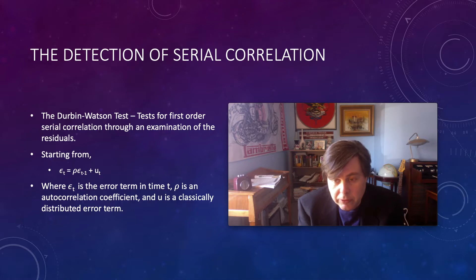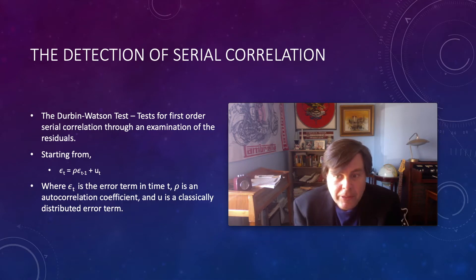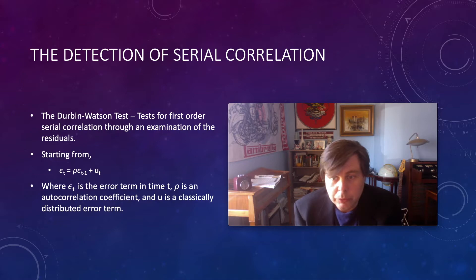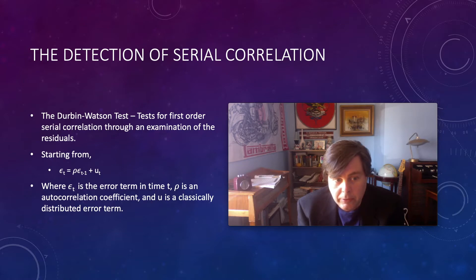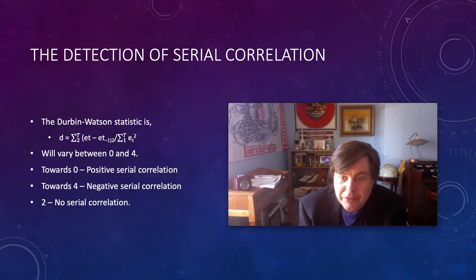The autocorrelation coefficient ρ expresses the functional relationship between the current error term and the previous error term. If you know ρ, the correction for serial correlation is very easy. But if you don't know it, you have to estimate it — which we'll talk about shortly. It's worth noting that if you attempt to estimate ρ and get it wrong, you will have made your problem worse, so one has to be cautious.